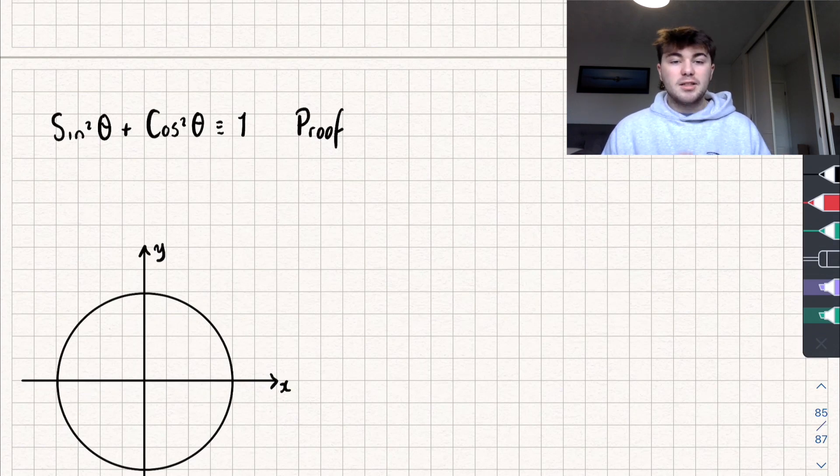Hello, in this video I'm going to show you a proof to the trig identity sine squared theta plus cos squared theta is identical to 1.